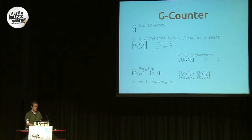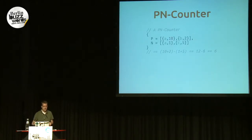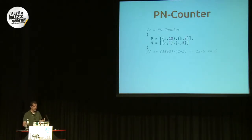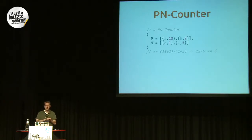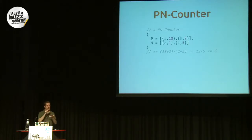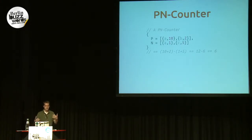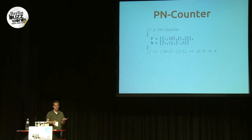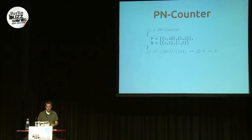Increment is useful, but you also want to decrement at times. There's a type called a PN-counter, meaning positive-negative. It's basically the same as a G-counter except there are two of them: one for increments and one for decrements. The value of this counter is the difference between the values of the two G-counters. Each is merged individually pairwise — when you get conflicting replicas, the P-counter is merged as if it were a G-counter and the N-counter is merged as if it were a G-counter. The resolution is really simple.